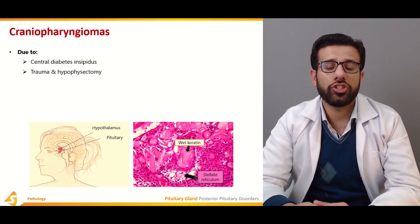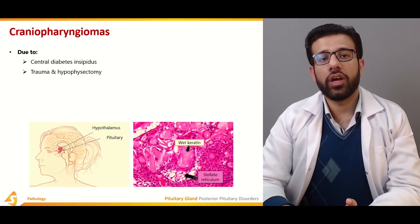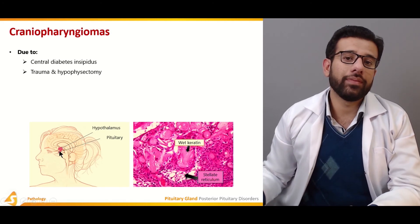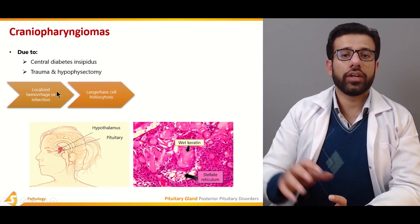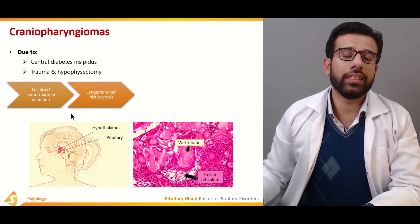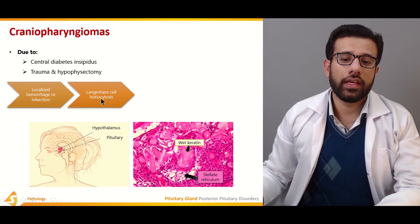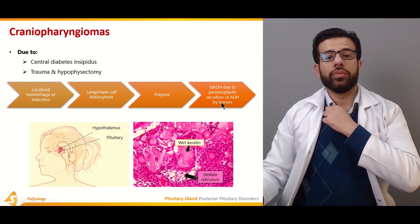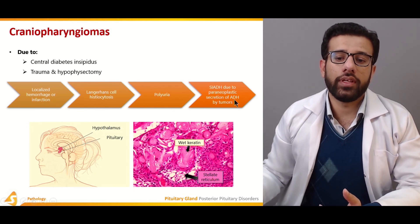Another complication associated with diabetes insipidus is craniopharyngioma. It can be caused by central diabetes insipidus, trauma, or hypophysectomy. The hypothalamus — the master endocrine gland — can also be affected. Trauma may involve localized hemorrhage or infarction, and Langerhans cell histiocytosis can also be present. SIADH can occur due to paraneoplastic production of ADH by a tumor, where the source of ADH is located elsewhere in the body.